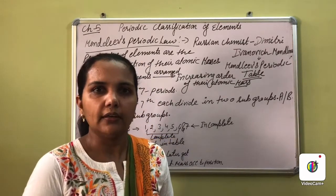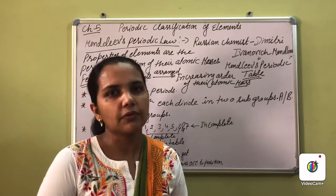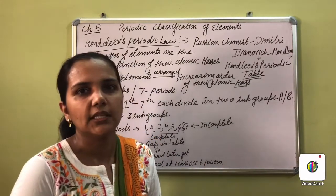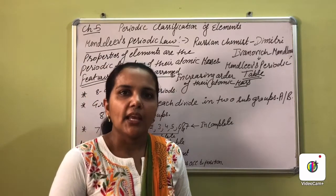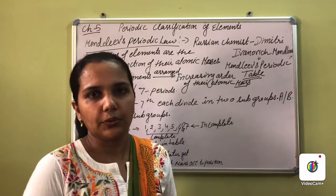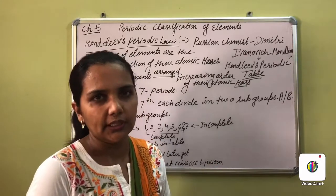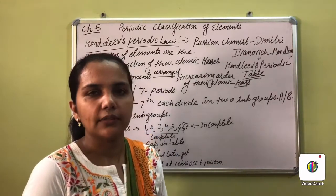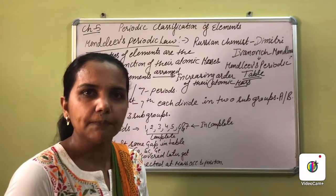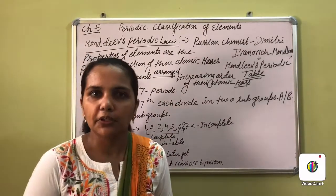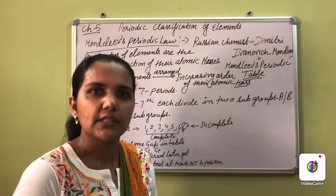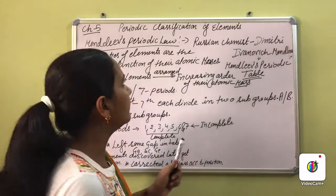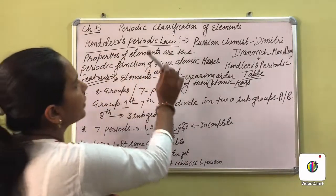The first theory was Dobereiner's Triads, given by scientist Dobereiner. The second was Newland's theory related to the classification of elements, known as Newland's Law of Octaves. We have studied both theories, but both have some limitations and demerits. So here is the third one - the Modern Periodic Law.